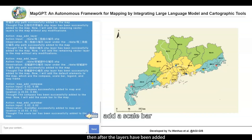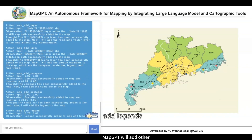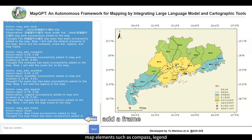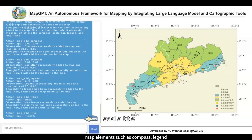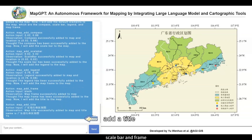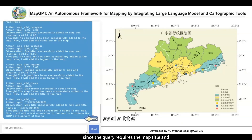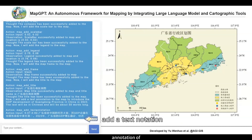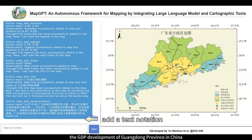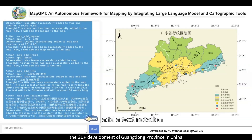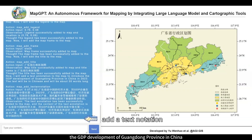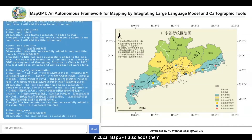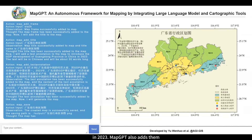Then, after the layers have been added, MapGPT will add other map elements such as the compass, legend, scale bar, and frame. Since the query requires a map title and annotation of the GDP development of Guangdong province in China in 2023, MapGPT also adds them.